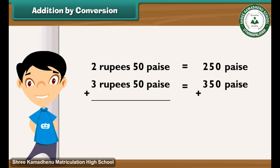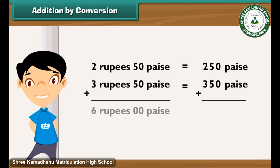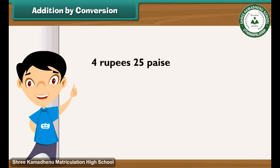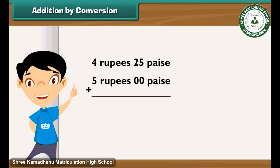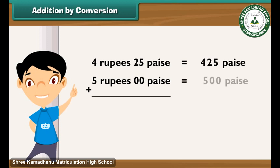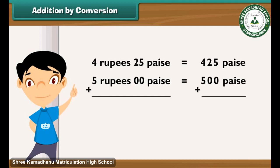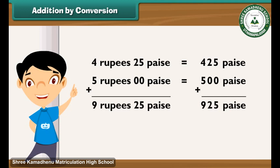So, we add 250 and 350 paise, which is equal to 600 paise. We now add 4 rupees 25 paise and 5 rupees. 4 rupees 25 paise is equal to 425 paise. 5 rupees is equal to 500 paise. So, we add 425 and 500, which is equal to 925 paise.